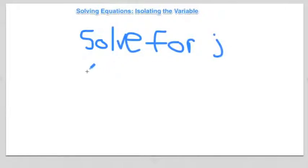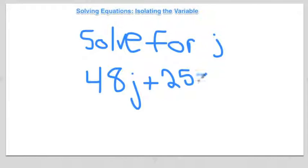So say we have the equation 48j plus 25 equals 12j minus 11. You're going to want to isolate the variable by getting the j over to one side.